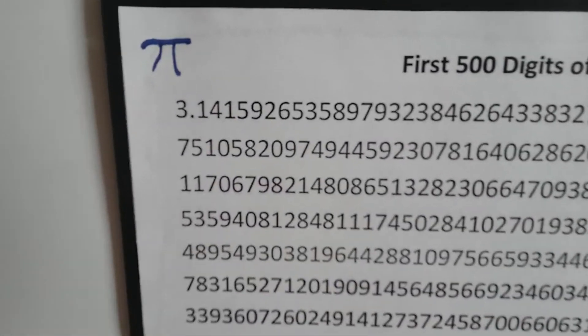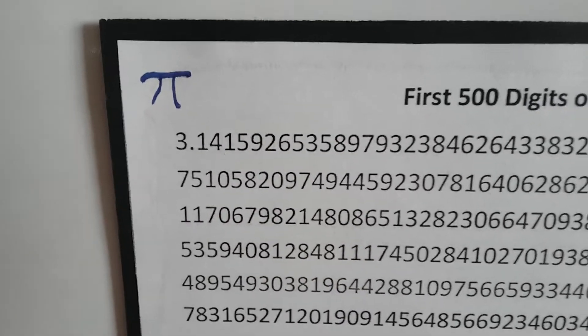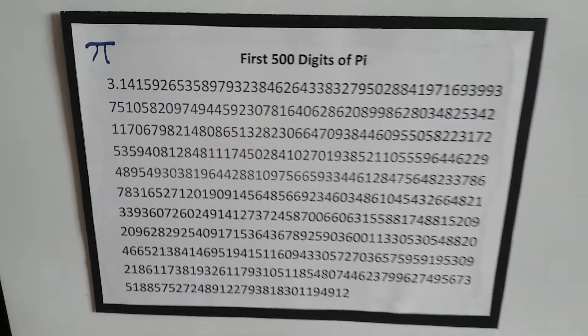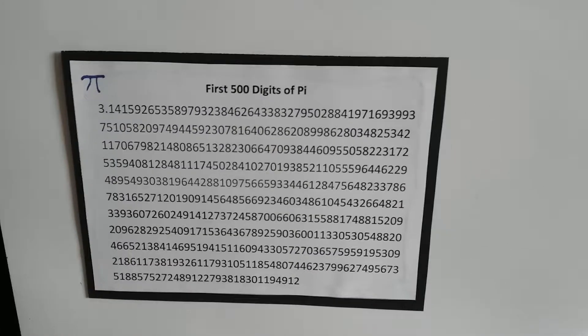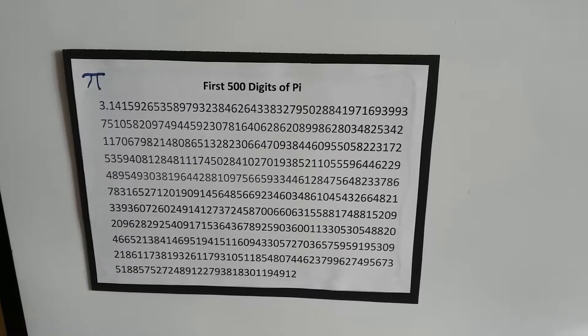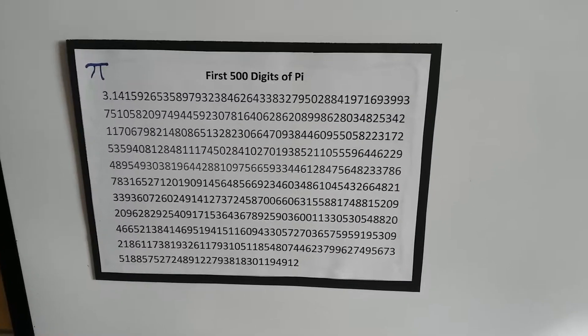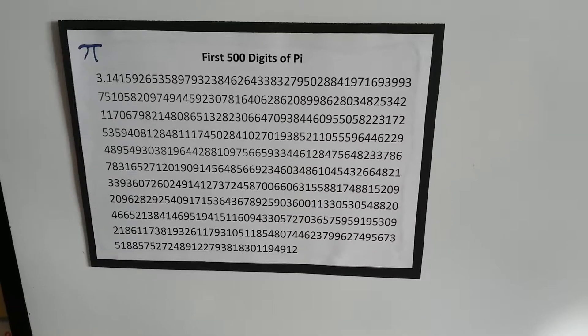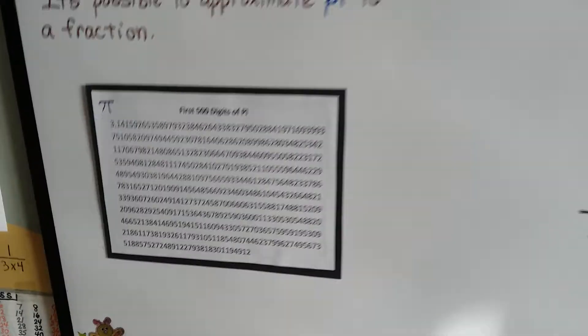You can see it starts with the 3.14, doesn't it? But it continues on and on. And, as of this year, they've found 13.3 trillion digits. And this is only 500. That's a lot of digits.